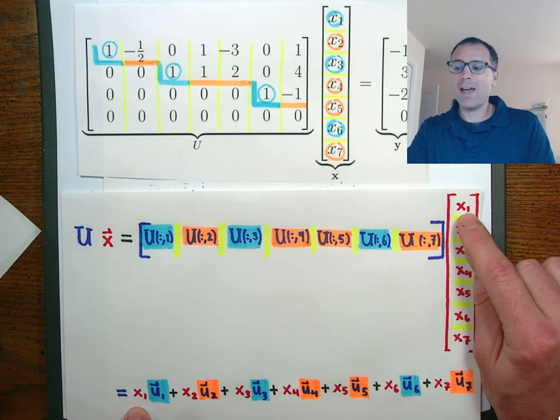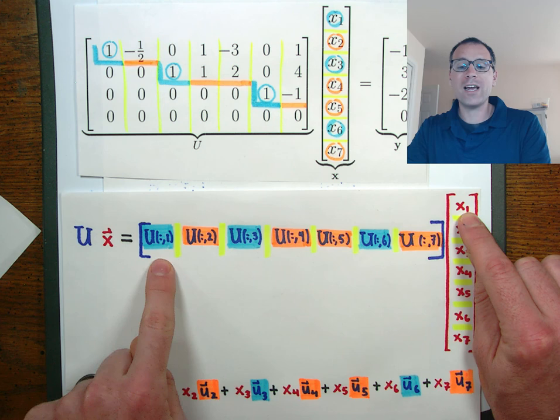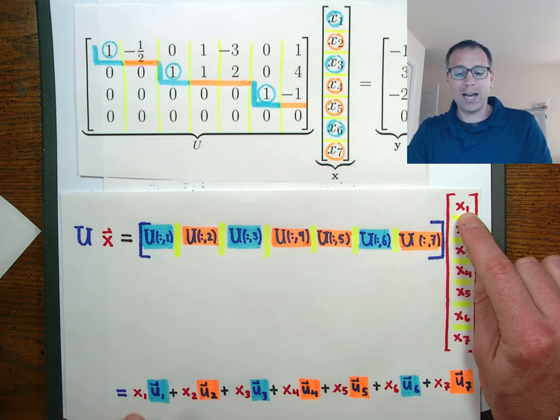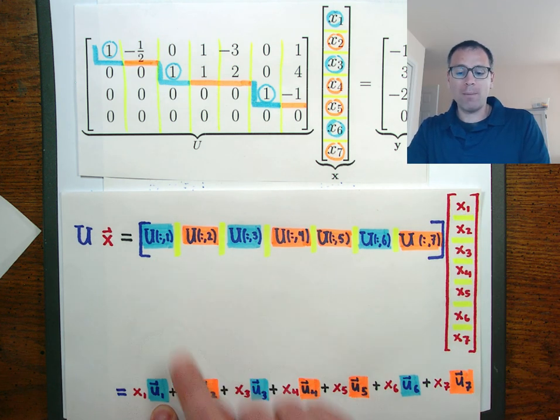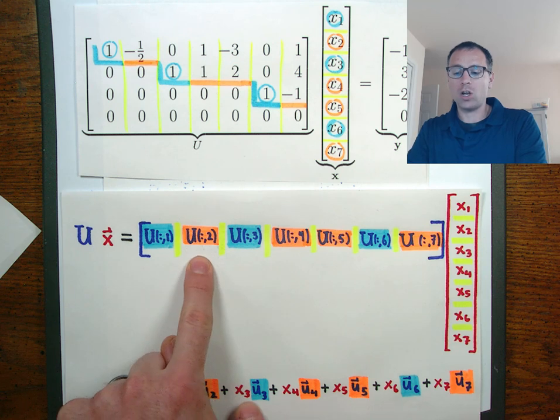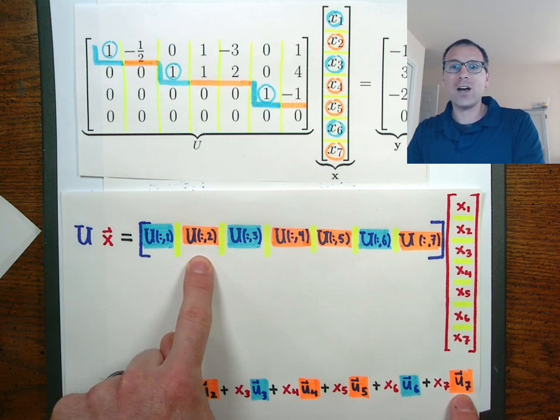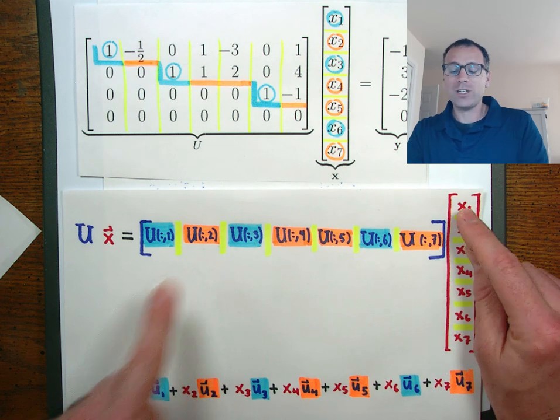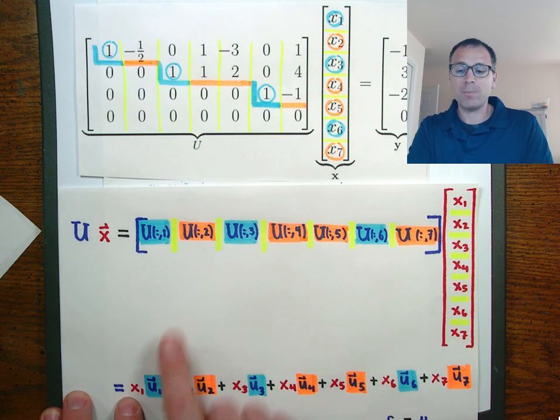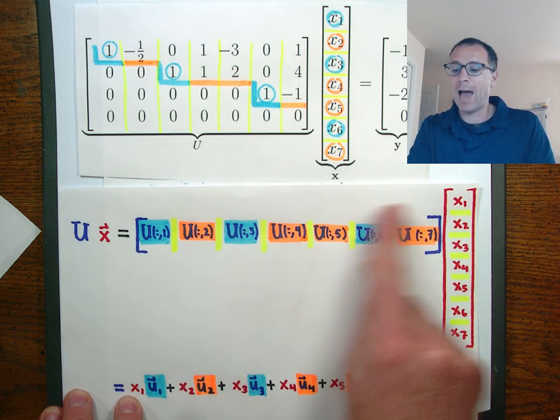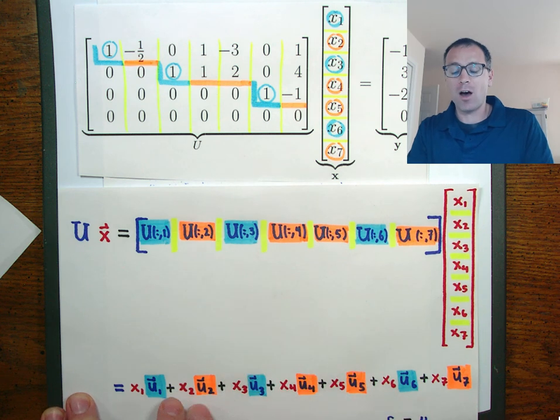Each individual scalar of x gets mapped to the appropriate column of u: x1 times u1 the first column, x2 times u2 the second column, x3 times u3 the third column, all the way down to the last column. And we see there's this really nice connection between the pivot variables and the pivot columns and the free variables and the non-pivot columns.